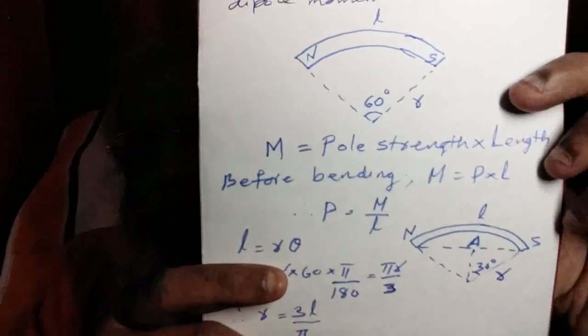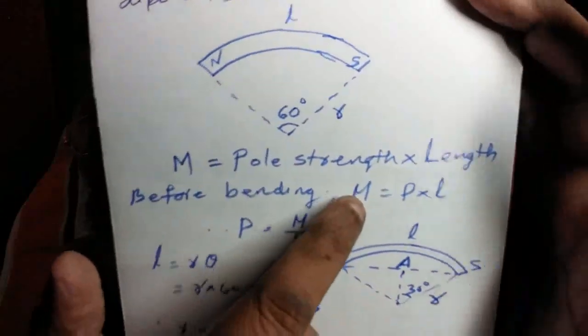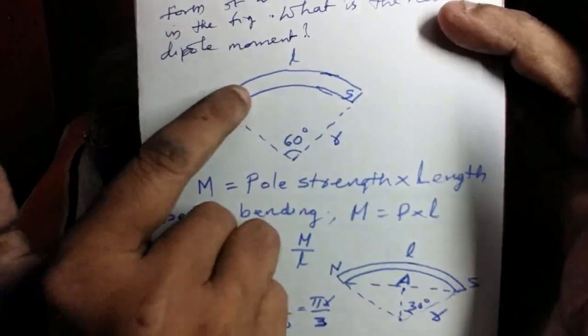Now magnetic moment of a bar magnet equals the product of pole strength and length of the magnet. Length is the distance between north pole and south pole. Pole strength is the attracting power. Ampere meter is the unit of pole strength. Above, initial moment M equals, before bending, M equals P into L, where P is the pole strength of the magnet, L is the distance between them.